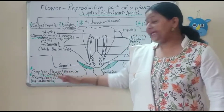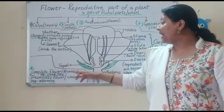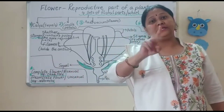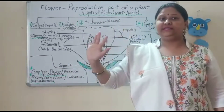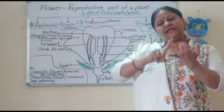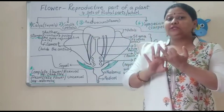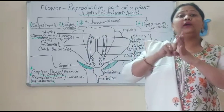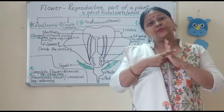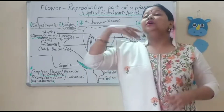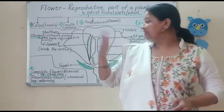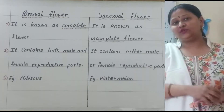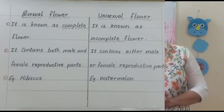Now coming to complete flower and incomplete flower. A complete flower is also known as a bisexual flower. Bisexual means both partners — that is, male and female parts — are both present. It means sepals, petals, stamen, and carpel are all present. All four parts are present, so it is known as a complete flower. For example, China rose and pea plant are examples of bisexual or complete flowers.